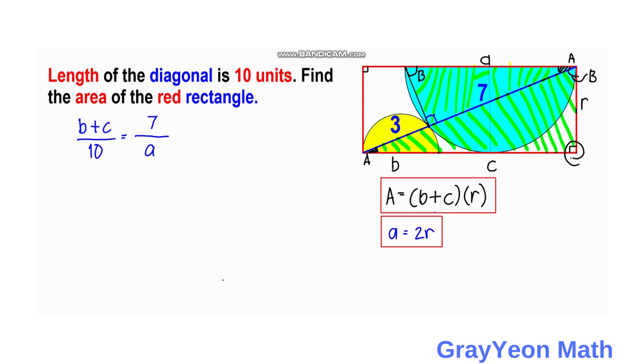Okay, so recall that we have A equals 2R. So we rewrite this: B plus C over 10 equals 7 over A, which is 2R. And since we are only after this B plus C times R, if we cross multiply, B plus C times R equals 7 times 10, and we retain the 2.